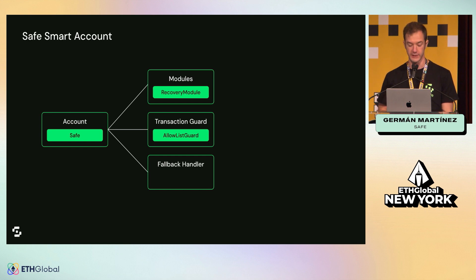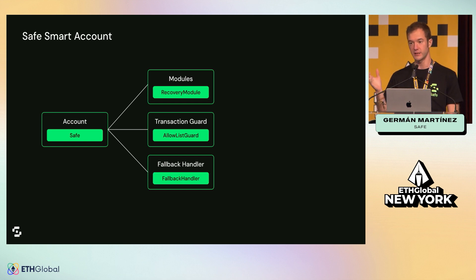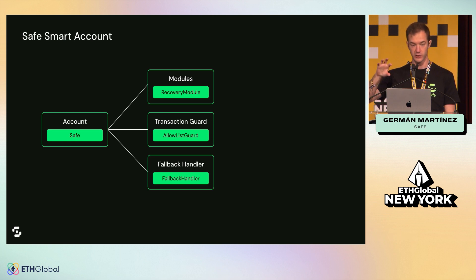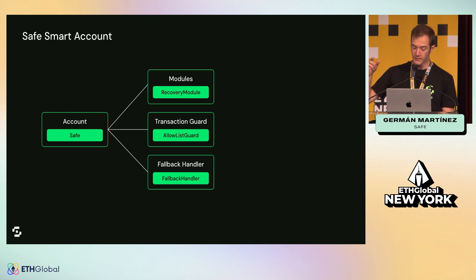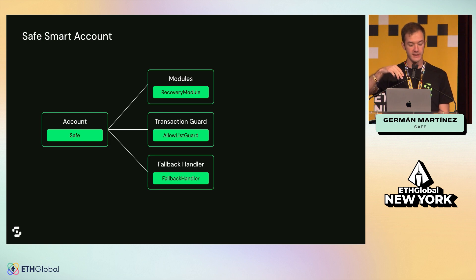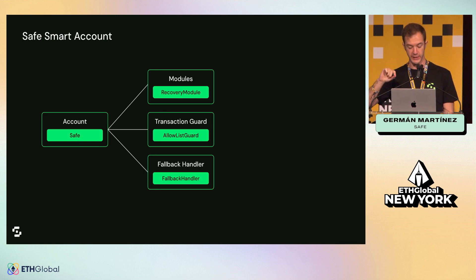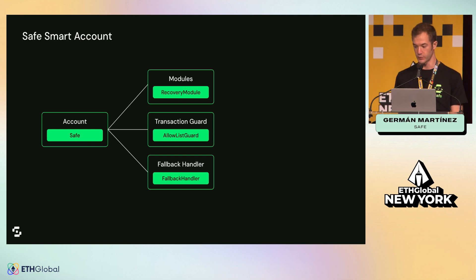We also have fallback handlers that allow adding new extra functions to the core contracts. In case there's a standard introduced that is not natively supported in the account, you could implement the required functions in this fallback handler, plug it to the account, and then everything would work.